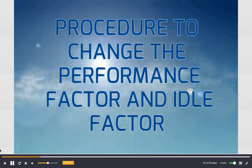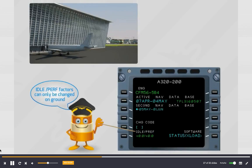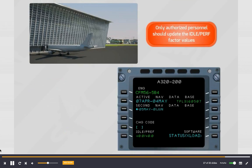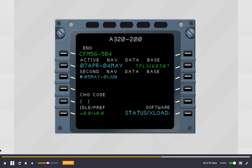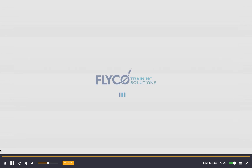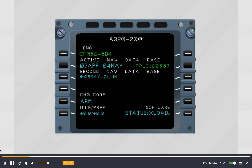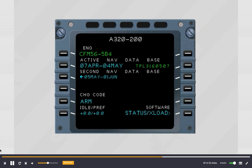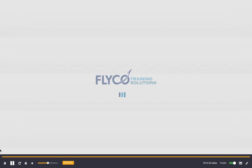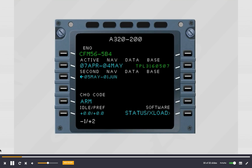Procedure to change the performance factor and idle factor: The idle and performance factors can only be changed on the ground, and only authorized personnel should update these values. Both factors are updated from the aircraft status page. Enter the appropriate code in the change code field — the default code is ARM, but the airline may change this code via the airline modifiable information database. The idle and performance factors are displayed in blue when a valid change code is entered. Write the new idle and performance factor values in the scratchpad and insert them into the corresponding line.